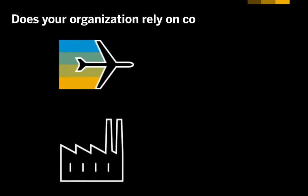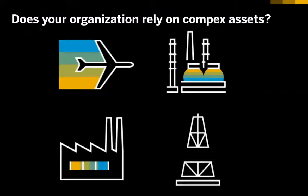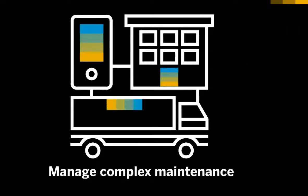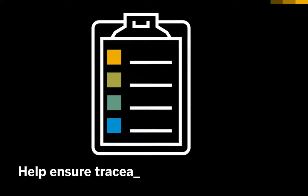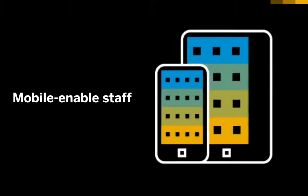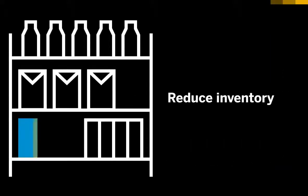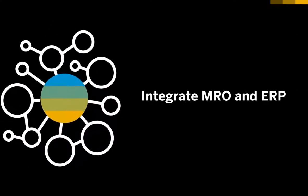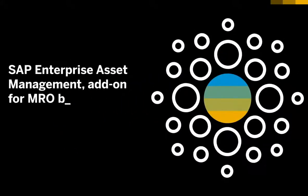Does your organization depend on complex assets to power operations, innovation, and growth? Do you need to implement and manage complex maintenance programs, provide full traceability, and report on asset compliance? Mobile-enable your maintenance staff, reduce inventory, optimize asset usage, and integrate maintenance with finance and logistics processes for SAP S/4HANA.